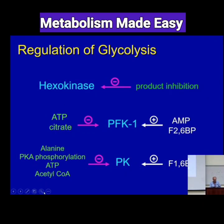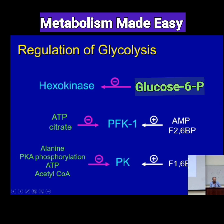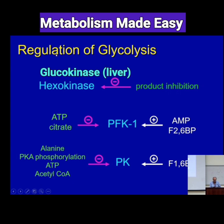This is a quick summary of some important enzymes. These are the three enzymes — also add glucokinase here. You have hexokinase and glucokinase; however, only hexokinase is inhibited by glucose 6-phosphate. But remember that in the liver, glucokinase is not inhibited by glucose 6-phosphate.